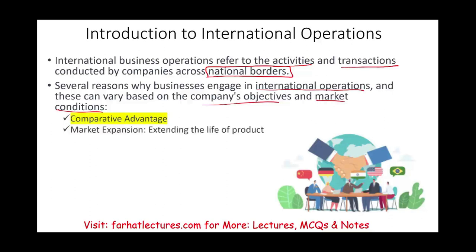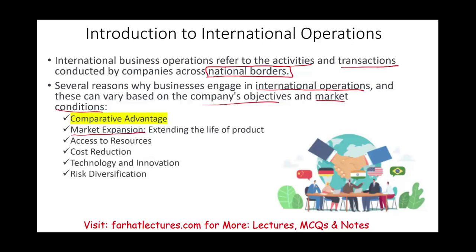The key reasons include: comparative advantage, market expansion — for instance, not limiting yourself to the U.S. — access to resources, cost reduction, technology and innovation, risk diversification, strategic alliances, and the existence of imperfect markets. We will look at each one of them separately. For these reasons, companies operate on an international level.